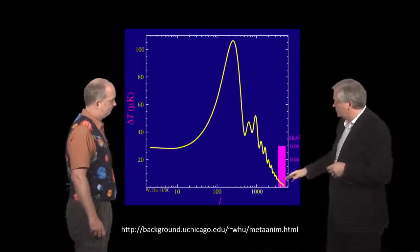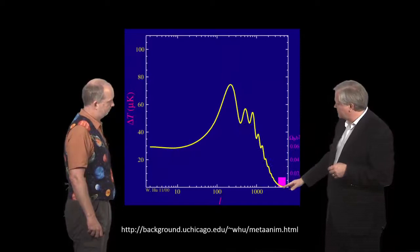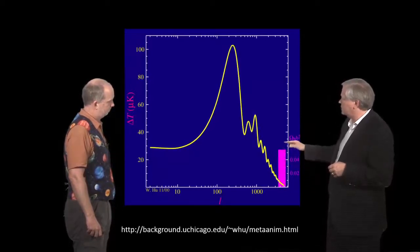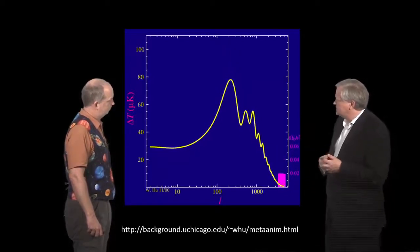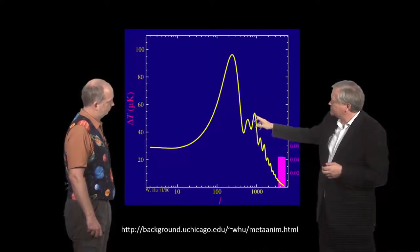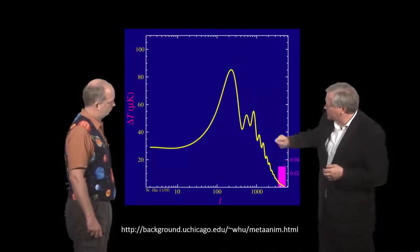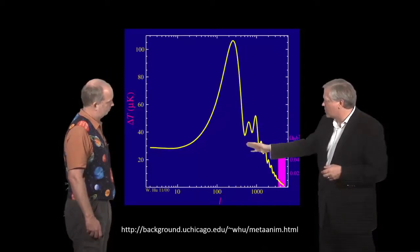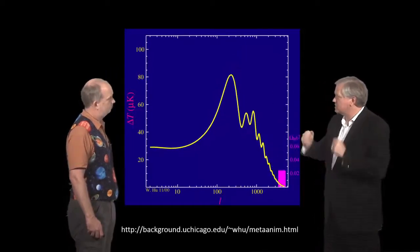We just keep that value at a constant value, and we see what happens as we add more and more baryons to the universe. And you can see that this curve comes up and the second one goes down. So the reverberation drops, and the compressions go up.